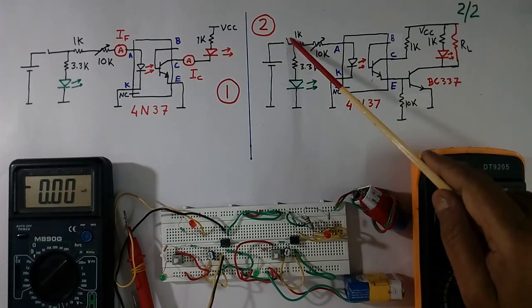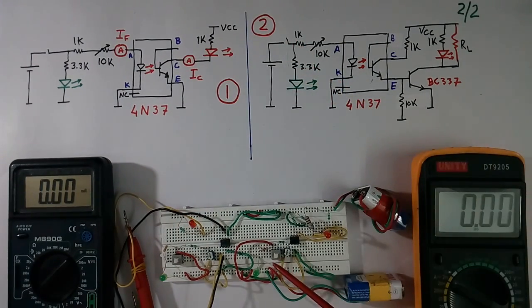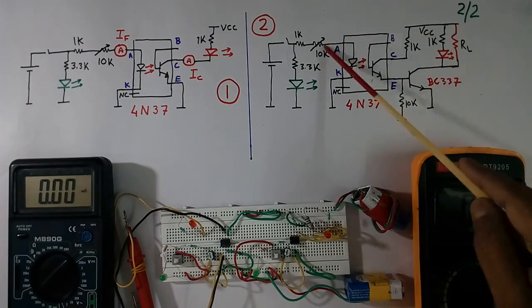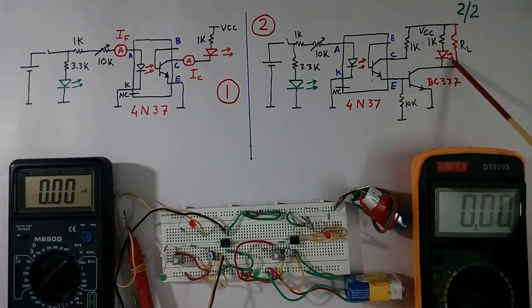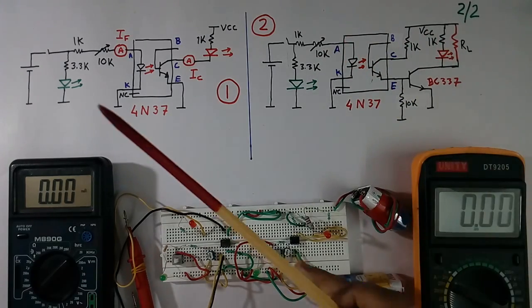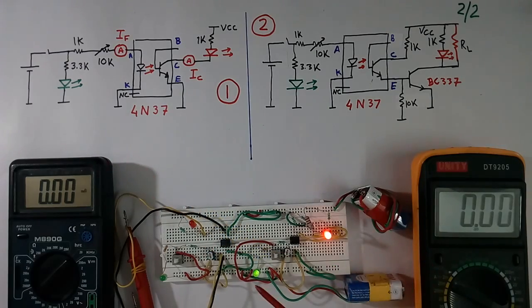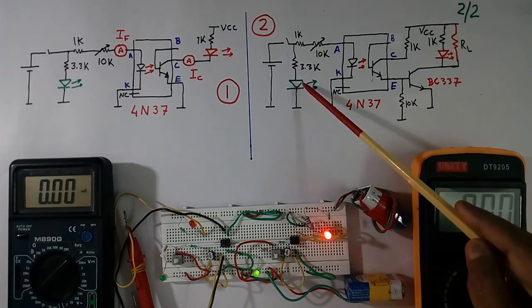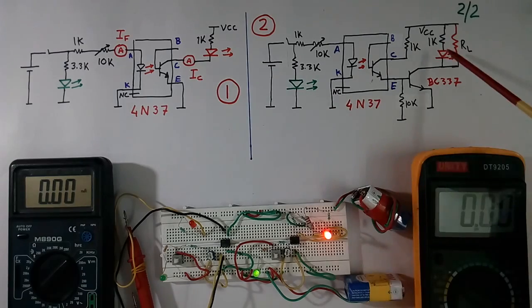Now I will switch this switch. Here I have not connected any ammeter, we will see only light intensity. So this switch is ON, so LED is glowing green LED, this also is glowing.